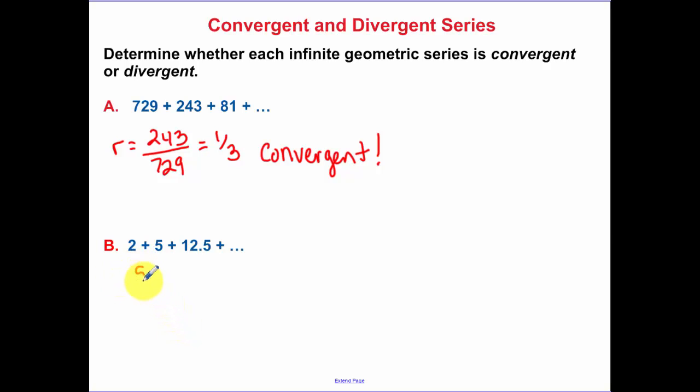Now let's look at this. So I have 5 over 2 as our common ratio. I take the second term divided by the first term. When I take 5 and multiply by 5 over 2, we do get 12.5. But our ratio here, even though it's a fraction, our ratio is greater than 1. So this diverges.